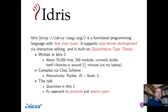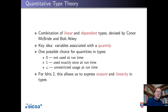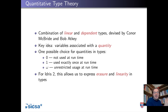So just to briefly introduce quantitative type theory. The key idea is that every variable is associated with a quantity. QTT itself is agnostic as to what those quantities can be. We've made a choice for Idris 2 that every variable has either quantity 0, 1, or omega. 0 meaning it's not used at runtime — so guaranteed erased. 1 meaning it's used exactly once at runtime. And omega, just like any other variable in any other language — unrestricted usage at runtime.